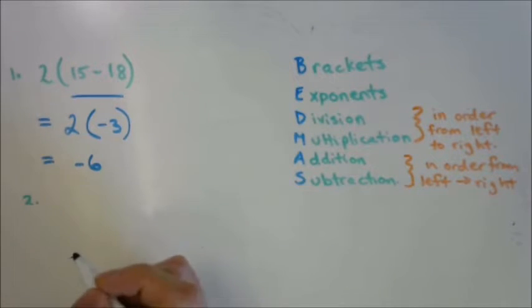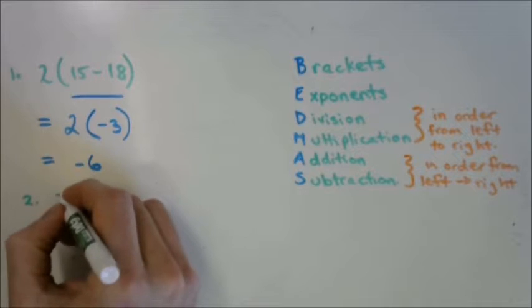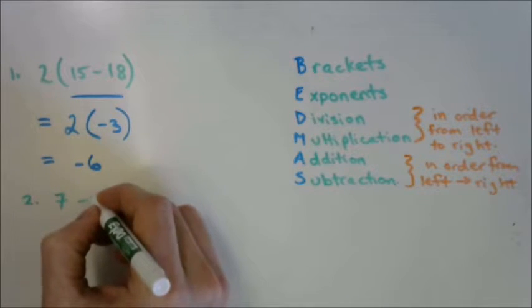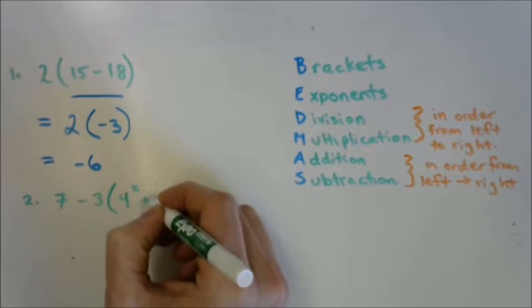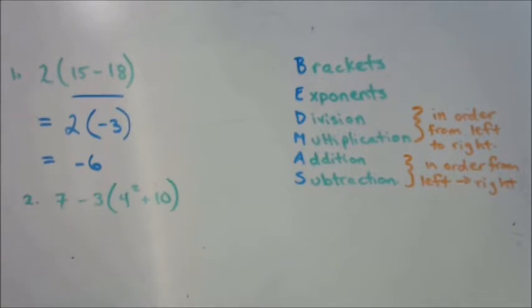Example 2. Example 2 is a little bit longer. It has 7 minus 3 times (4 squared plus 10). There's a lot going on here. I see an exponent. I see a bracket. That's a group. I see subtraction and multiplication.